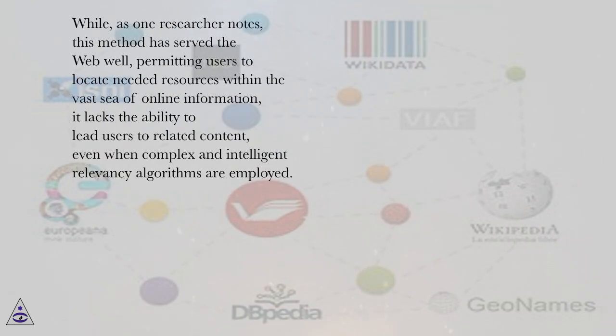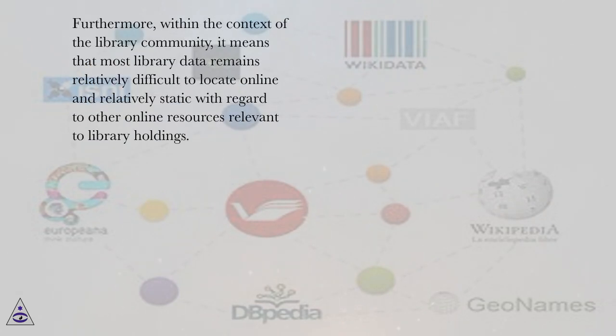While, as one researcher notes, this method has served the web well, permitting users to locate needed resources within the vast sea of online information, it lacks the ability to lead users to related content, even when complex and intelligent relevancy algorithms are employed. Furthermore, within the context of the library community, it means that most library data remains relatively difficult to locate online and relatively static with regard to other online resources relevant to library holdings. In other words, library data, in its current form, remains in the proverbial silo of its online catalogs. However, through the employment of semantic web technologies, there is the potential to expand the uses of library data in the web environment and thereby to enhance user experience of this data.